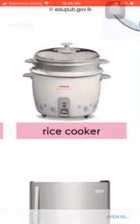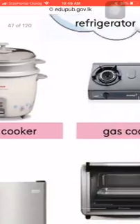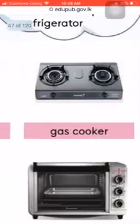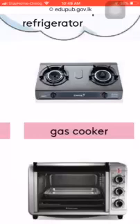What is a rice cooker? The rice cooker is used to cook rice and steam vegetables. What is a gas cooker? The gas cooker is used to cook milk and boil water.